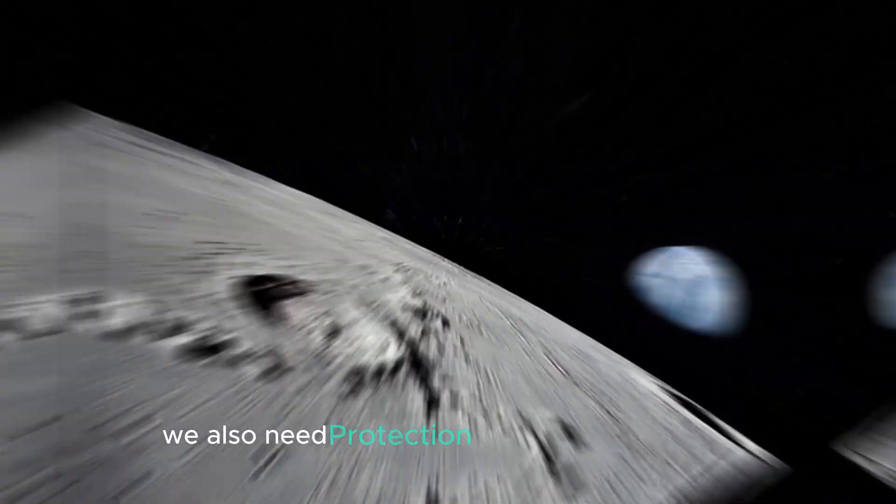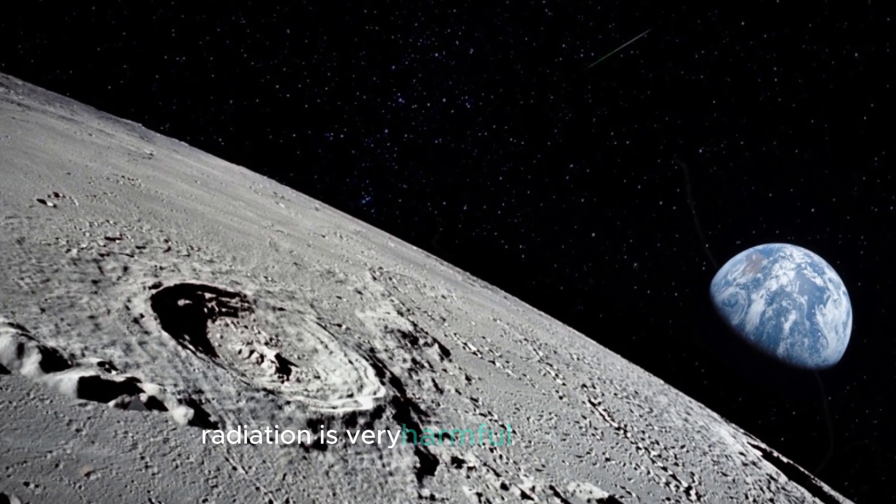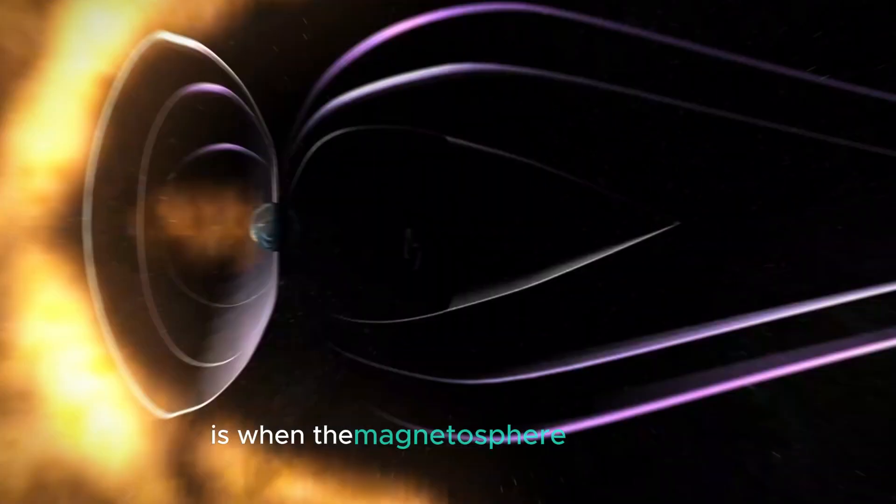However, we also need protection from the heliosphere. The solar wind radiation is very harmful to life on Earth. This is when the magnetosphere shows up.